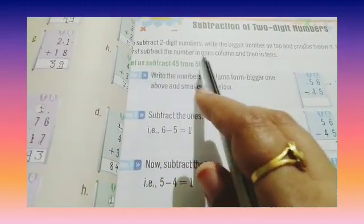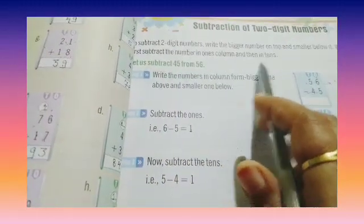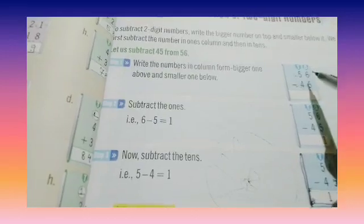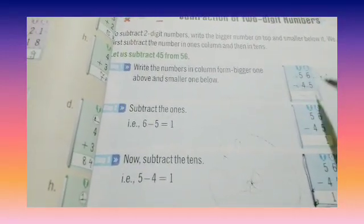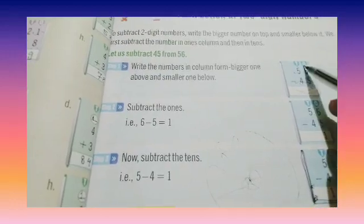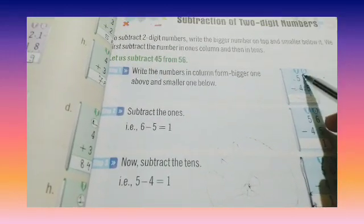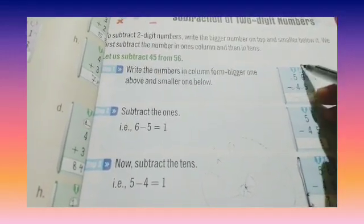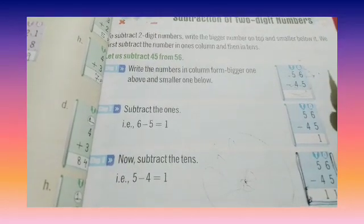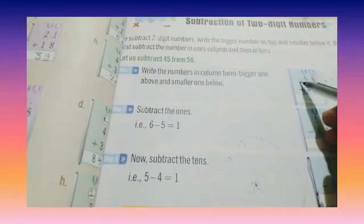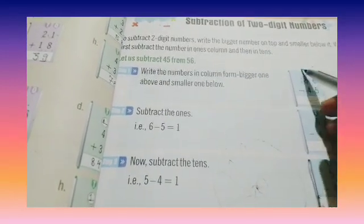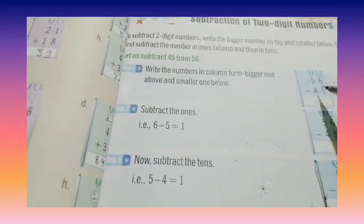We first subtract the number in one's column and then in tenths. After writing the bigger number above the smaller number, arrange the numbers in one's and tenths column. First we are going to subtract the digit at the one's place and then we will subtract the digits at the tenths place.